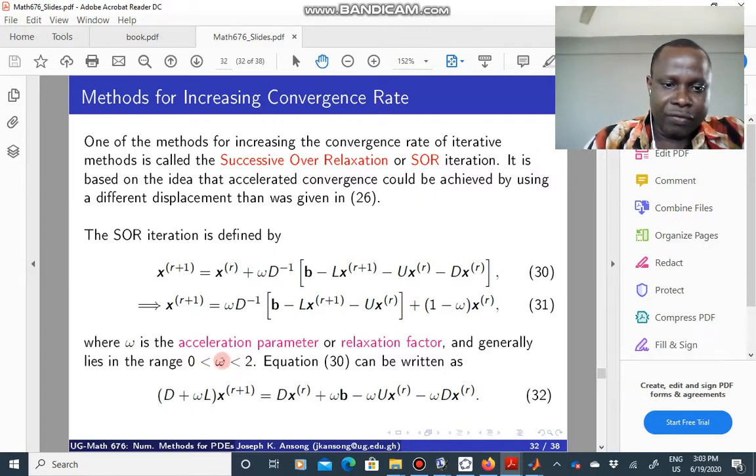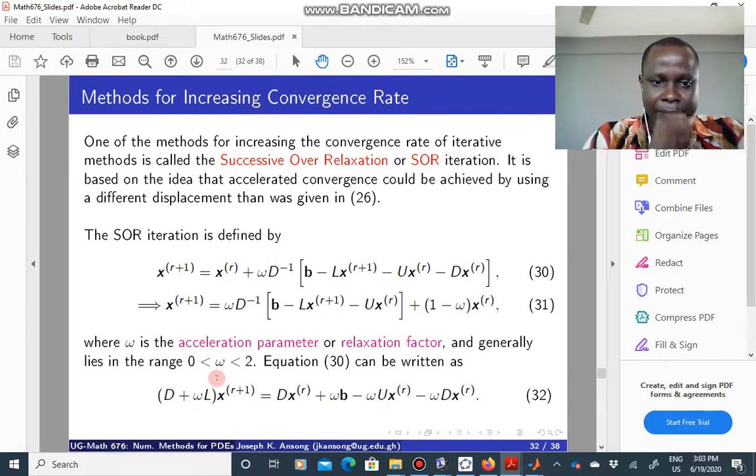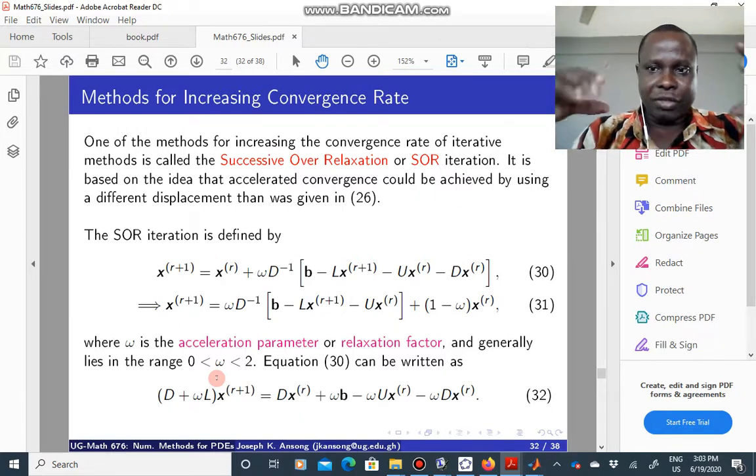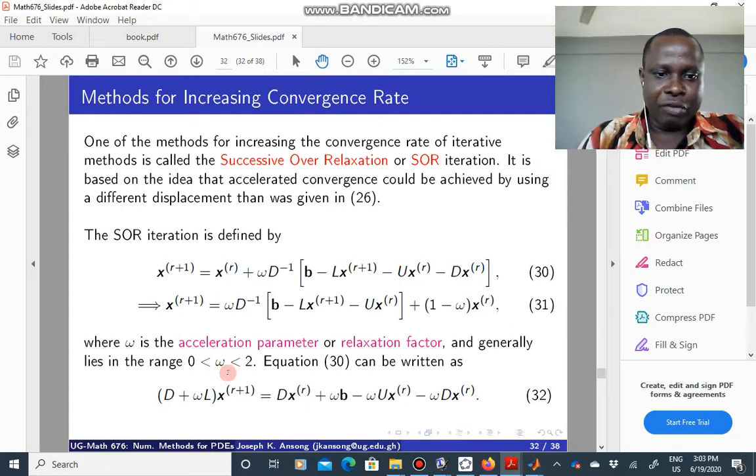So it's often not straightforward how you find omega. You often have to experiment, let's say with a smaller version of your problem, to see which value of omega will give you a better convergence rate.